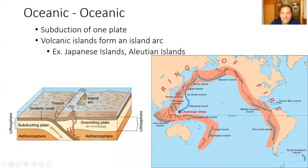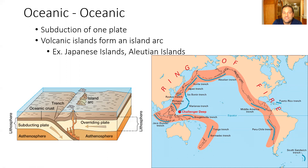When two oceanic plates collide, the older oceanic plate will sink. For example, near the Philippine Trench and Japan, the Pacific plate is older so it is the one going down. You can see with the Aleutian Islands that those islands were formed because the older Pacific plate is going underneath, creating those islands. That is called an ocean-to-ocean convergent plate boundary.